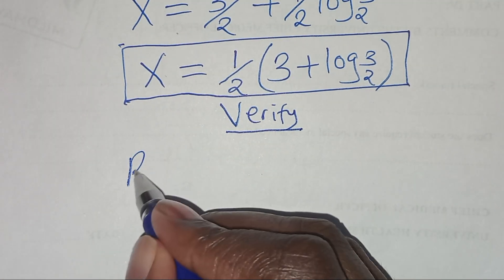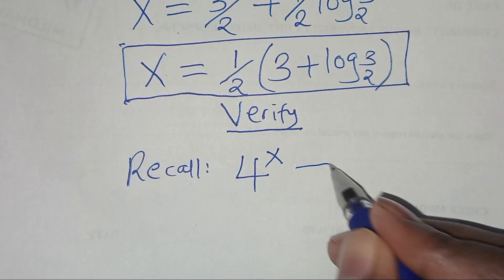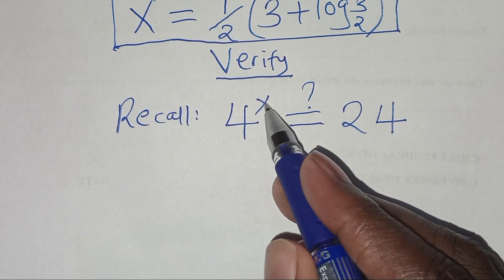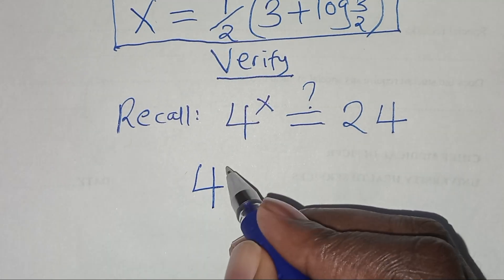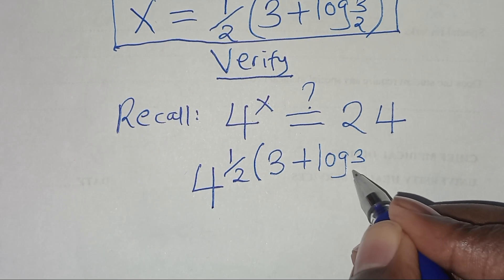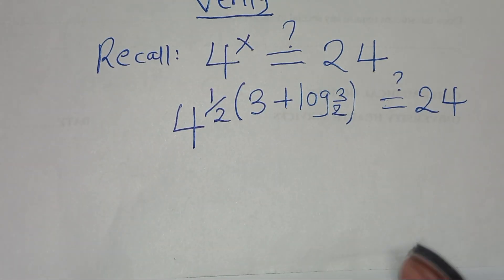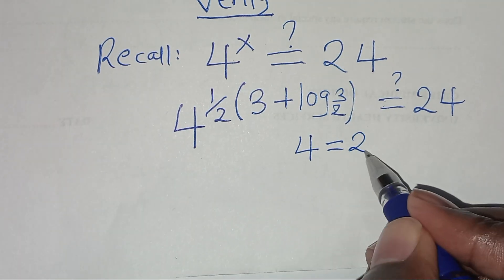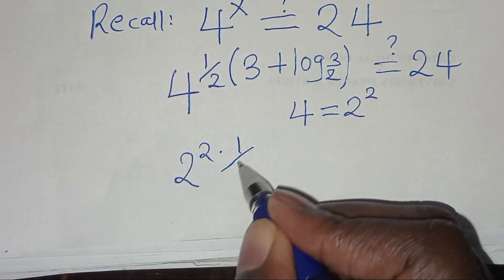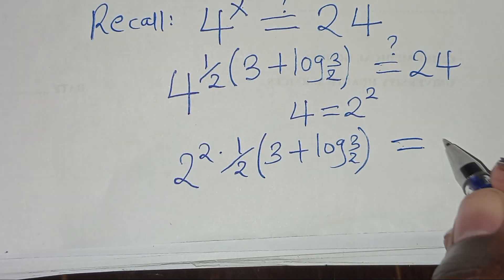Recall we have that 4 to the power x should give us a value of 24. Let's substitute the value of x, so we have 4 to the power of one half times (3 + log₂3), and this is supposed to give us a value of 24. We can express 4 as 2 to the power 2, so this is the same as 2 to the power 2 times one half times (3 + log₂3), which is supposed to give us 24.